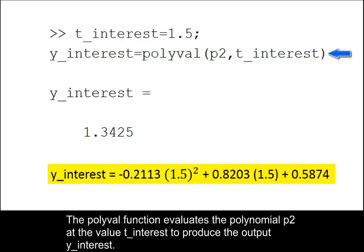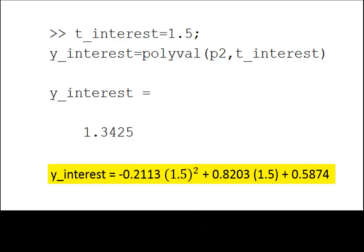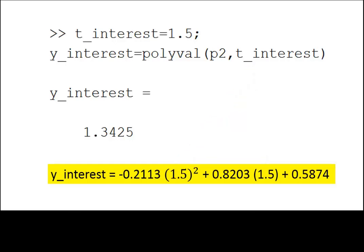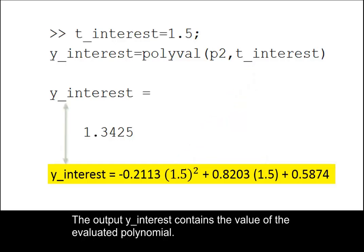The polyval function evaluates the polynomial p2 at the value t interest to produce the output y interest. This computation using the polynomial is shown here. The output y interest contains the value of the evaluated polynomial.